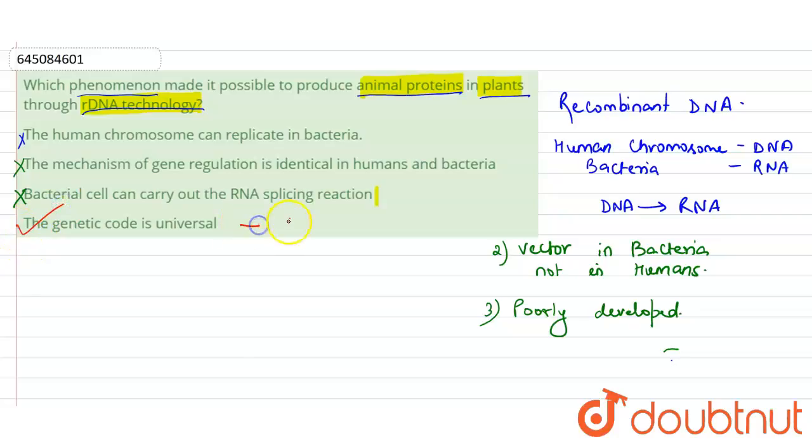Coming up to the fourth option, this is the correct option because in this triplet code is used and this codon is specific. Now let's take an example that if AUG in human code for the methionine.